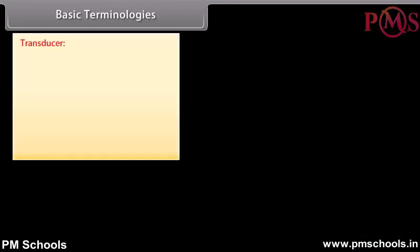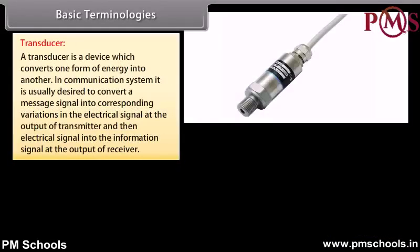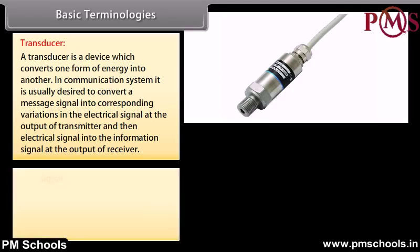Basic terminologies: Transducer — a transducer is a device which converts one form of energy into another. In a communication system, it is usually desired to convert a message signal into corresponding variations in the electrical signal at the output of the transmitter, and then the electrical signal into the information signal at the output of the receiver.